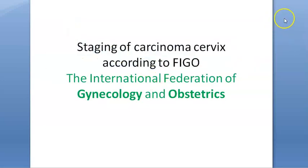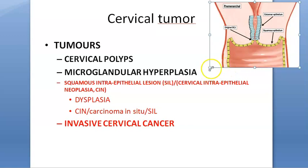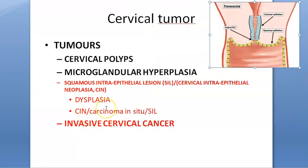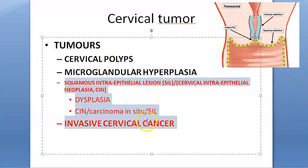In this video we want to look at the staging of carcinoma cervix according to FIGO, the International Federation of Gynecology and Obstetrics. We are looking at the cervix, specifically cervical cancer. Here you have the columnar epithelium, the squamous epithelium, and between these two is the squamous columnar junction. This is where cancers can start, especially because of human papillomavirus, which is sexually transmitted. The focus of this video is staging.